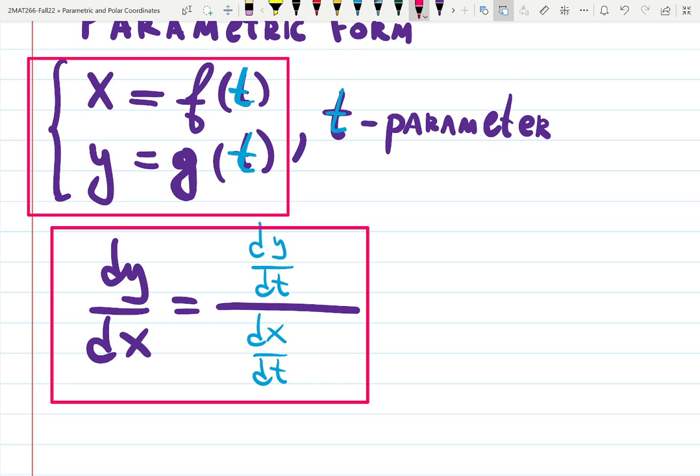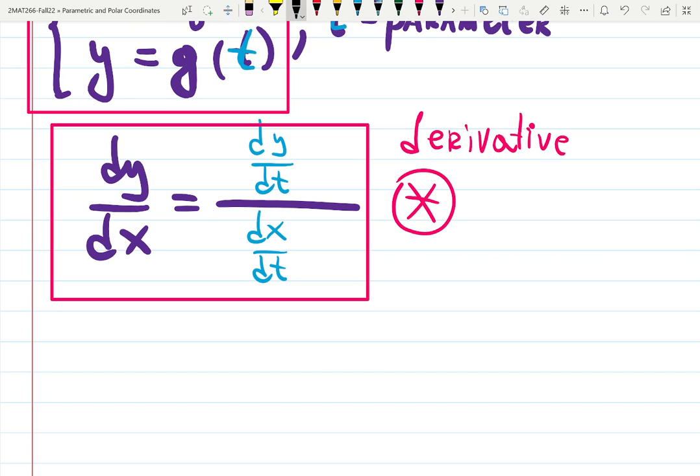It's just derivative of the rise over derivative of the run. How fast does the function change? Does dy over dx? As fast as the rise changing over run changing. Let's call it formula number star. Star formula. That's a derivative. Do you know how to say derivative in Russian? Производная. Because it derives. And derives is производить. Производная.